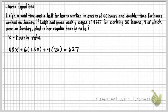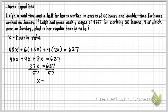From here, we can simplify. I'm just going to put all those X's together. So that's going to be 40X + 9X + 8X equals 627, so 57X equals 627. Then I'm going to divide by 57, and her hourly rate is going to equal $11.